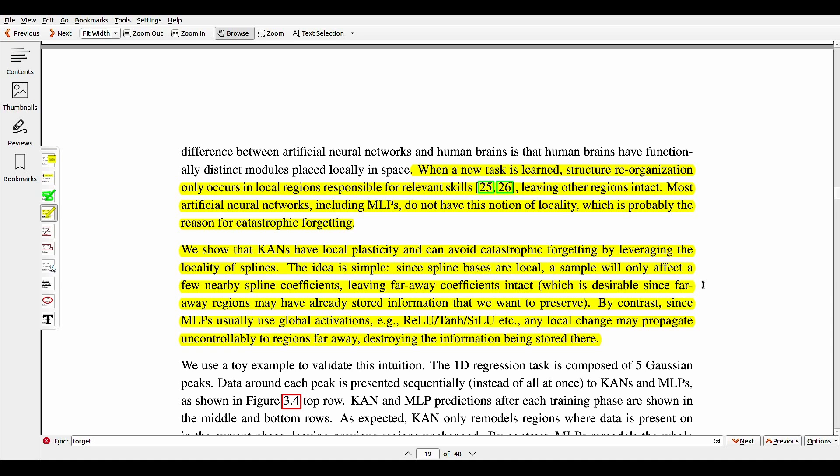We showed that CANs have local plasticity and can avoid catastrophic forgetting by leveraging the locality of splines. The idea is simple. Since spline bases are local, a sample will only affect a few nearby spline coefficients, leaving far away coefficients intact, which is desirable since far away regions may have already stored information that you want to preserve.